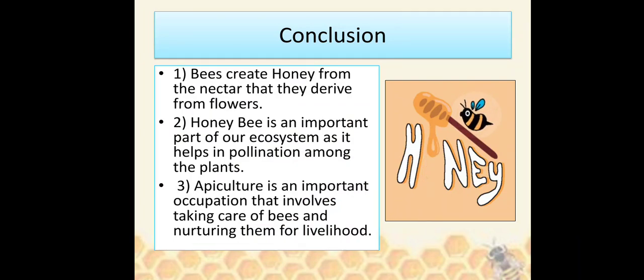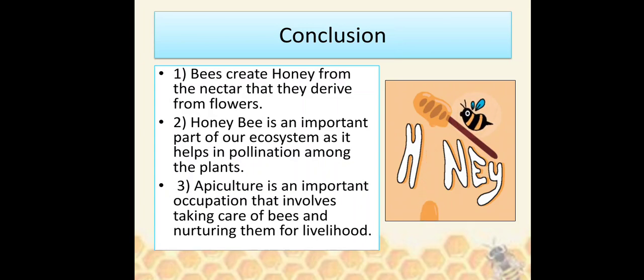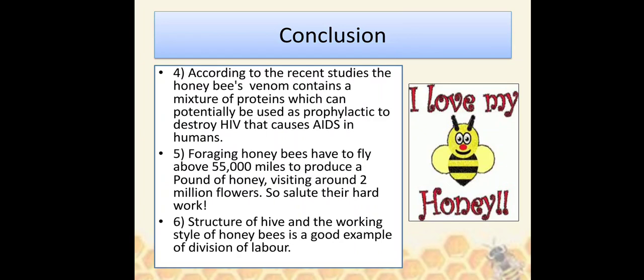Conclusion: Bees create honey from the nectar they derive from flowers. Honeybees are an important part of our ecosystem as they help in pollination among plants. Apiculture is an important occupation involving taking care of bees and nurturing them for livelihood. Recent studies show that honeybee venom contains a mixture of proteins that can potentially be used as a prophylactic to destroy HIV, which causes AIDS in humans. Foraging honeybees have to fly about 55,000 miles to produce a pound of honey, visiting around 2 million flowers. The structure of the hive and the working style of honeybees is a good example of division of labor.